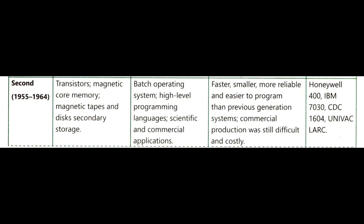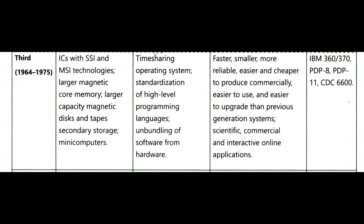Second generation computers cover the time period from 1955 to 1964. Basic components include transistor, magnetic core memory, magnetic tape and disk secondary storage. Software used are batch operating systems, high-level programming language, and scientific and commercial applications. They are faster, smaller, and more reliable than first generation computers, but second generation computers are also costly and difficult to use. Examples are Honeybill 400, IBM 7030, CDC 1604, UNIVAC, and LARC.